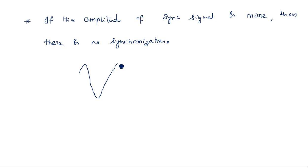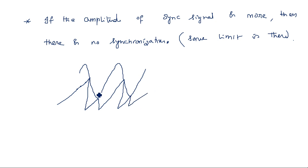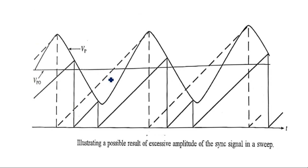There is a definite limit to amplitude. If you increase amplitude beyond this limit, the capacitor may touch a peak, return, touch again inconsistently — sometimes reaching maximum peak, sometimes less. So there is no proper synchronization. This is the result of excessive amplitude of the synchronization signal. You cannot increase the amplitude beyond the limit.